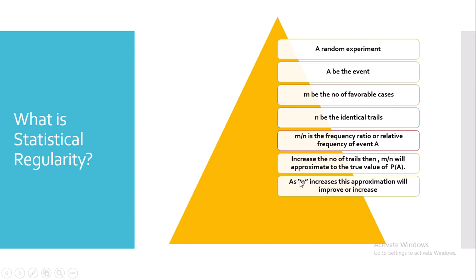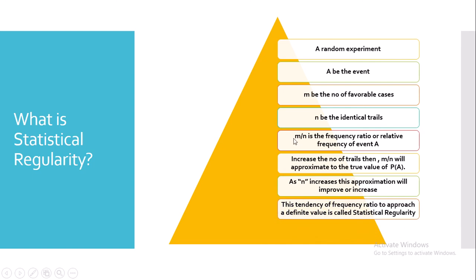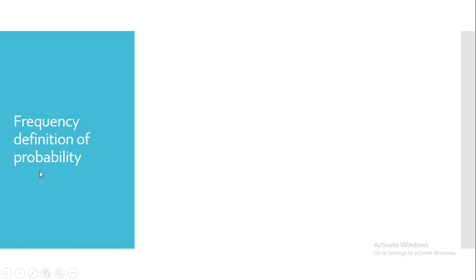As n increases, or as the total number of identical trials increases, the approximation of the probability of the occurrence of event A improves. This tendency of the frequency ratio m by n — that is, the total number of favorable cases divided by the total number of identical cases — to approach a definite value as n increases is called statistical regularity.